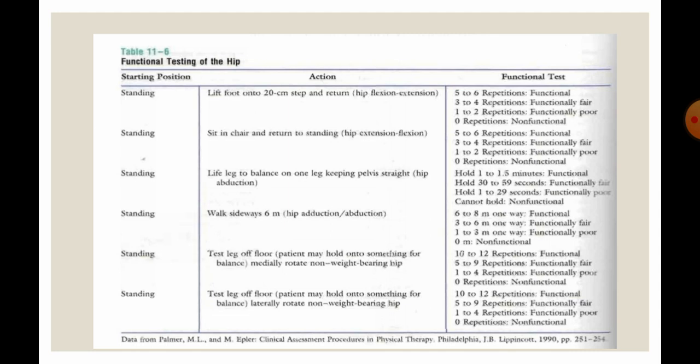For example, in the standing position you can ask the patient to lift their foot onto a 20-centimeter step and return. The grading is: five to six repetitions means functional, three to four repetitions means functionally fair, one to two repetitions means functionally poor, and zero repetitions means non-functional.